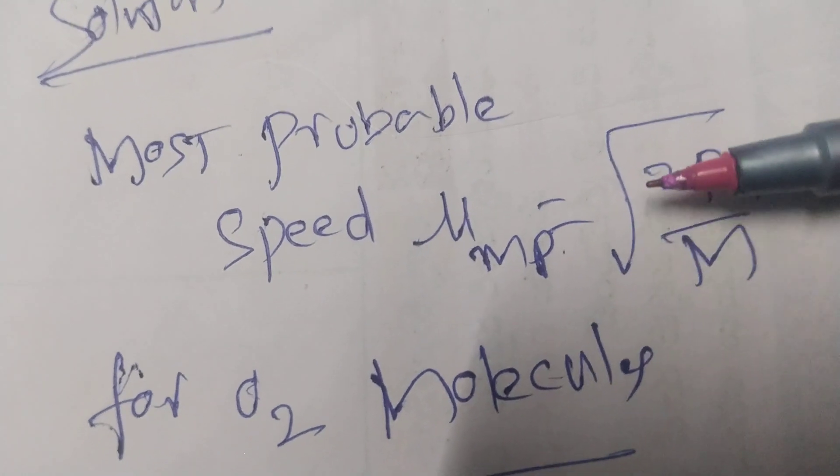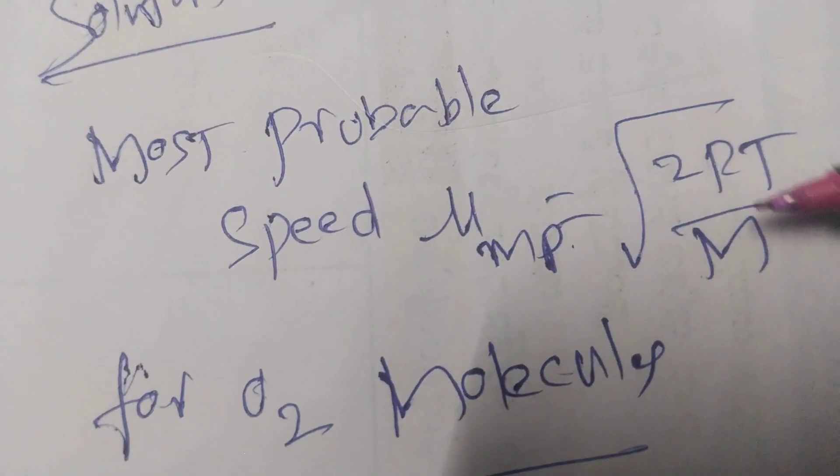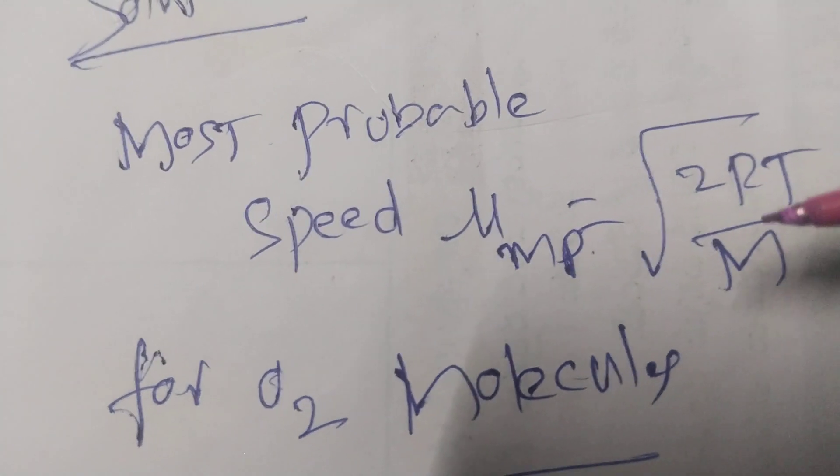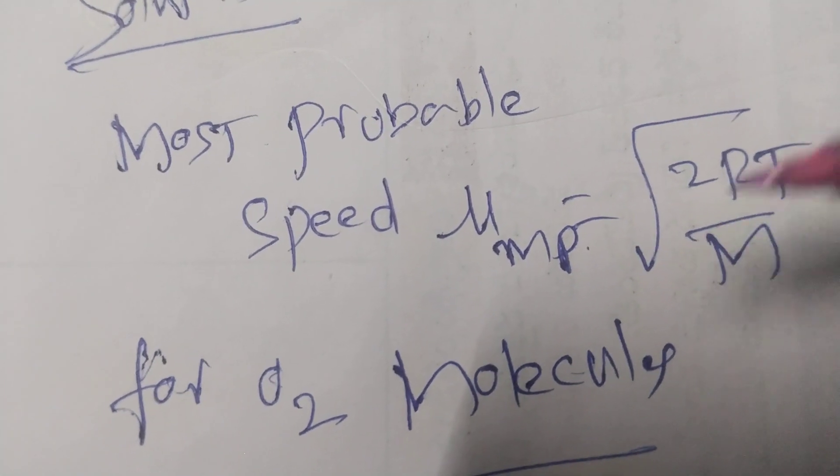RMS velocity, instead of 2, it's 3. Root of 3RT by M is the formula for RMS velocity, root mean square velocity.